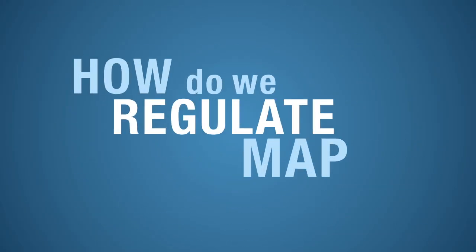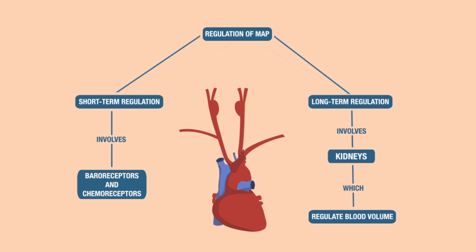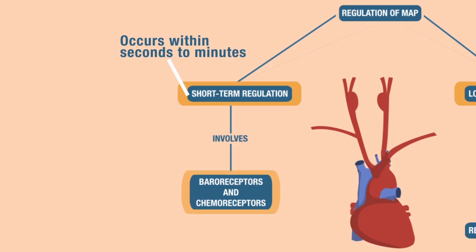How do we regulate MAP? We're going to use neural and hormonal controls to do that. You have to keep MAP at a constant — you've got to maintain homeostasis; you don't want it too high or too low. The two ways to do that are through short-term regulation, which occurs within seconds to minutes, and long-term regulation that occurs within minutes to days. In short-term regulation, this involves baroreceptors. It also involves chemoreceptors, but we won't focus on those with respect to MAP, as we already discussed chemoreceptors with respect to respiration.